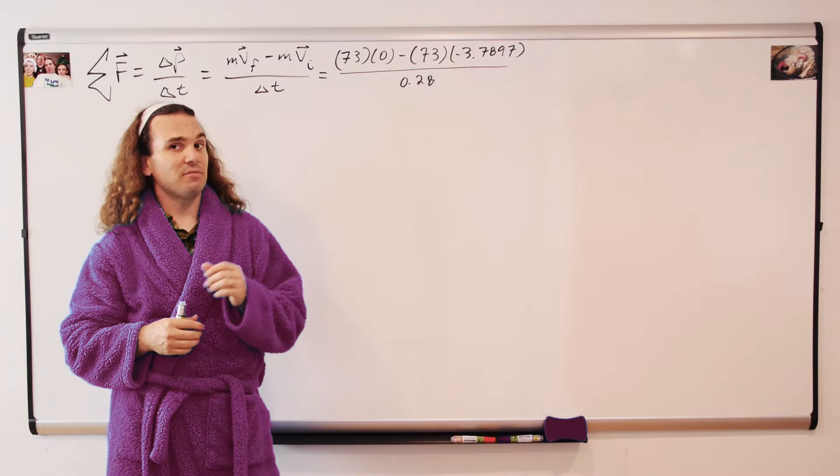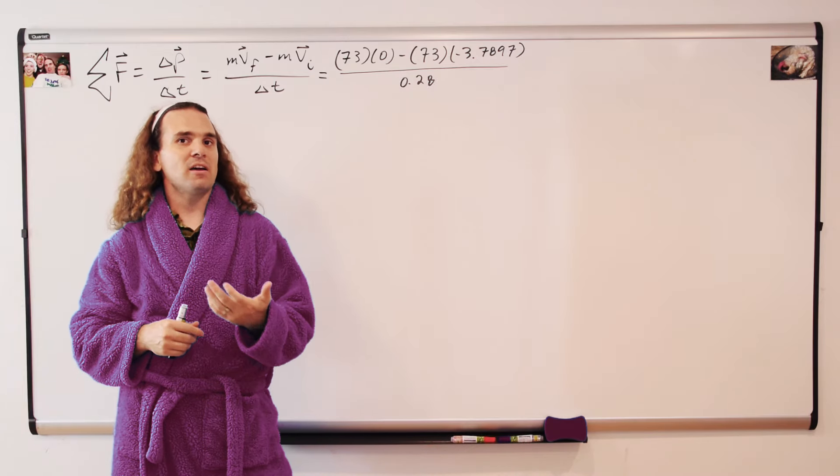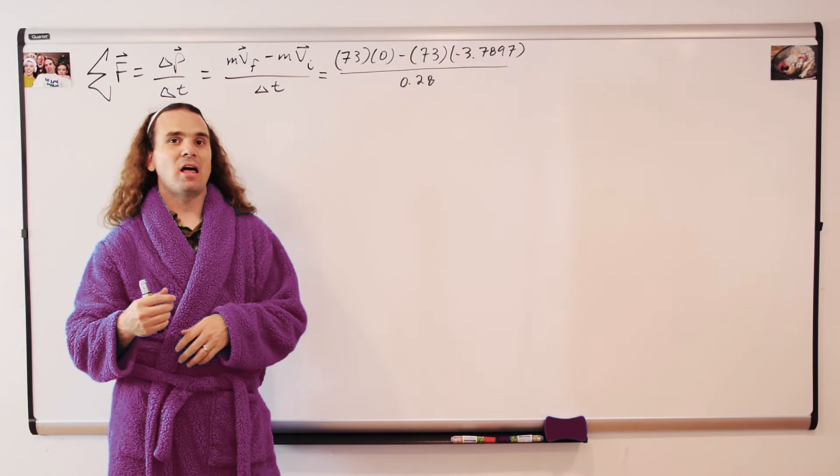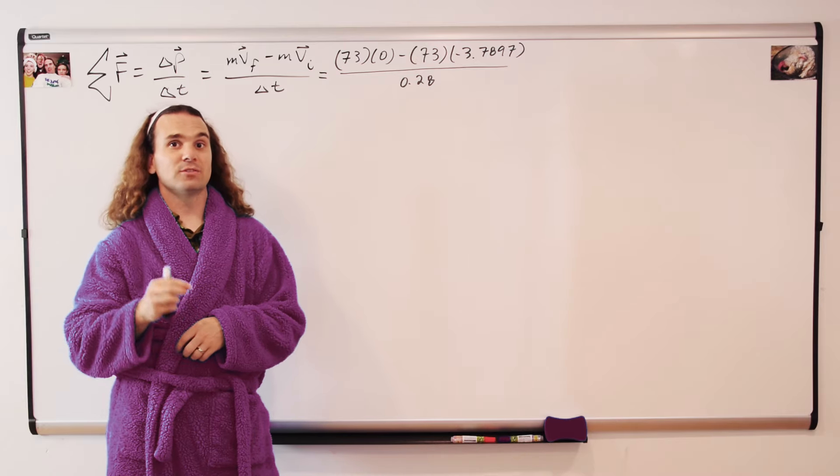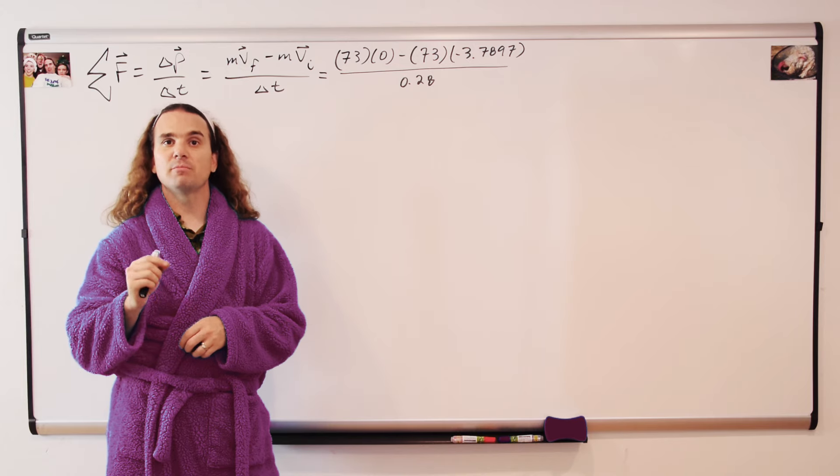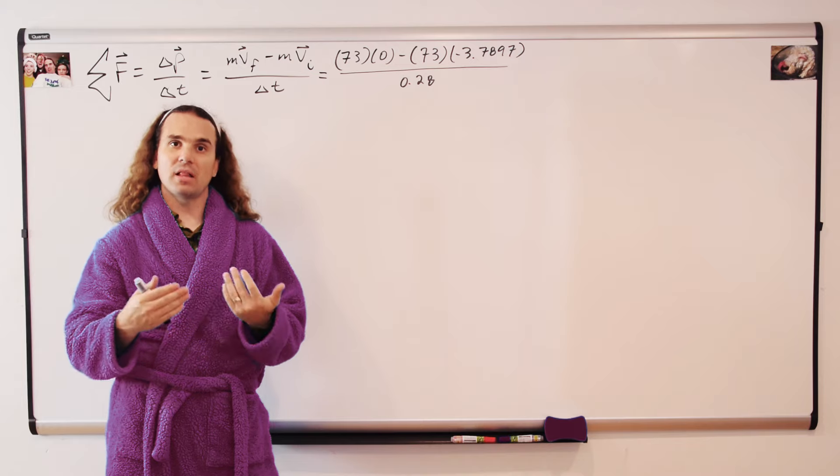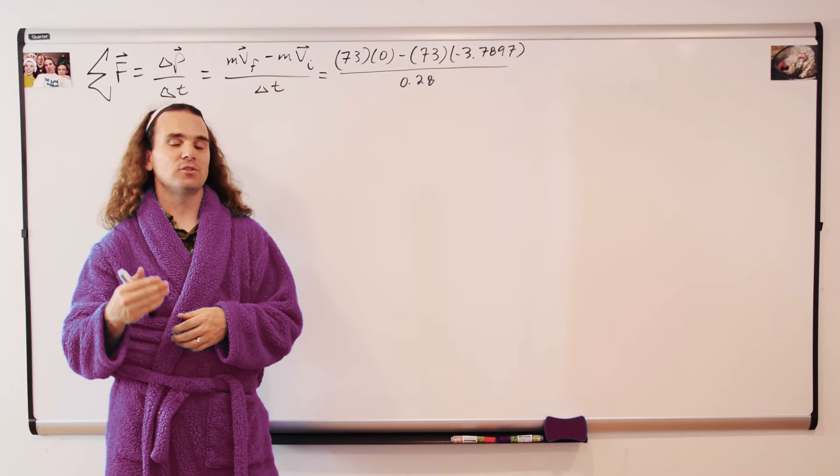My mass is 73 kilograms. My final velocity after striking the ground is zero. I stopped. My velocity right before striking the ground is 3.7897 meters per second down. And the change in time while I'm colliding with the ground is 0.28 seconds.